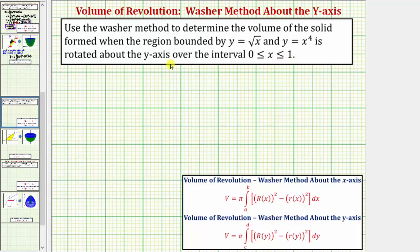Because we have rotation about the y-axis, we'll be using this formula here to determine the volume, where the volume equals pi times the integral from c to d of the square of big R of y minus the square of little r of y, integrated with respect to y. Big R of y is the outer radius and little r of y is the inner radius.